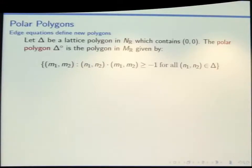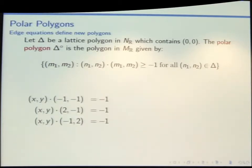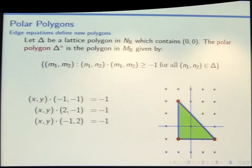So we can define a new polygon. It's going to be the set of all points that dot with points in our original polygon and give us at least negative 1. We can just rewrite all of our edge equations — we wrote them as something times x plus something times y equals negative 1, but that's just a dot product in disguise. We read off the coefficients in our edge equations, and once we've done that, we graph those points and get a new polygon.